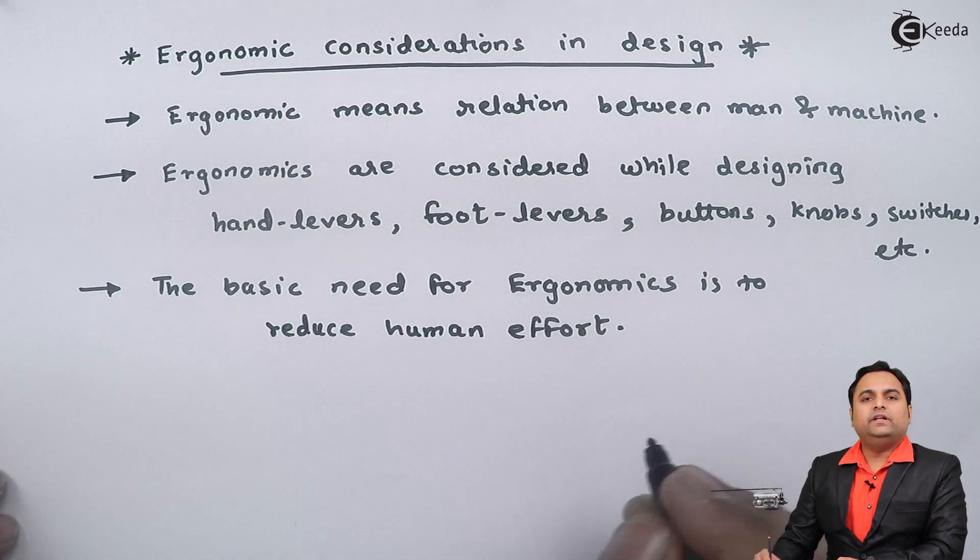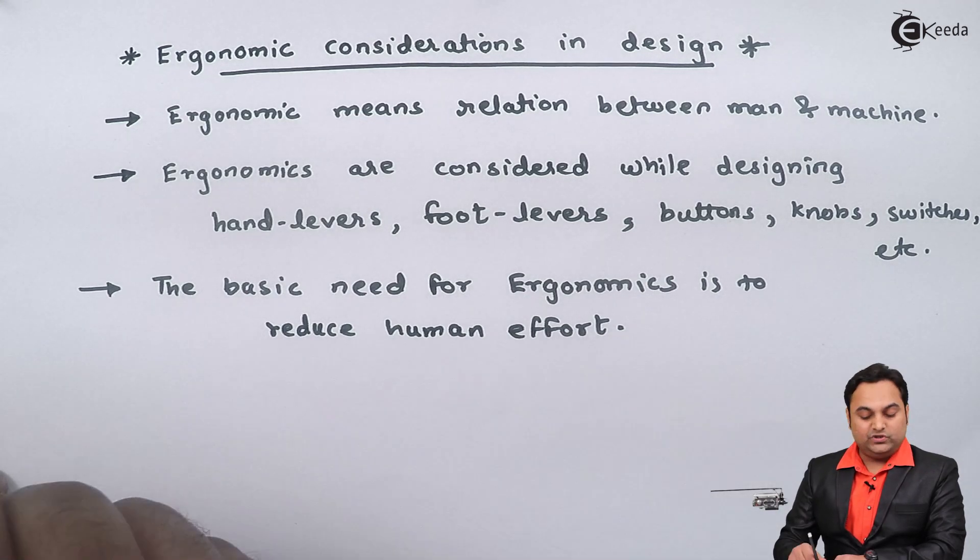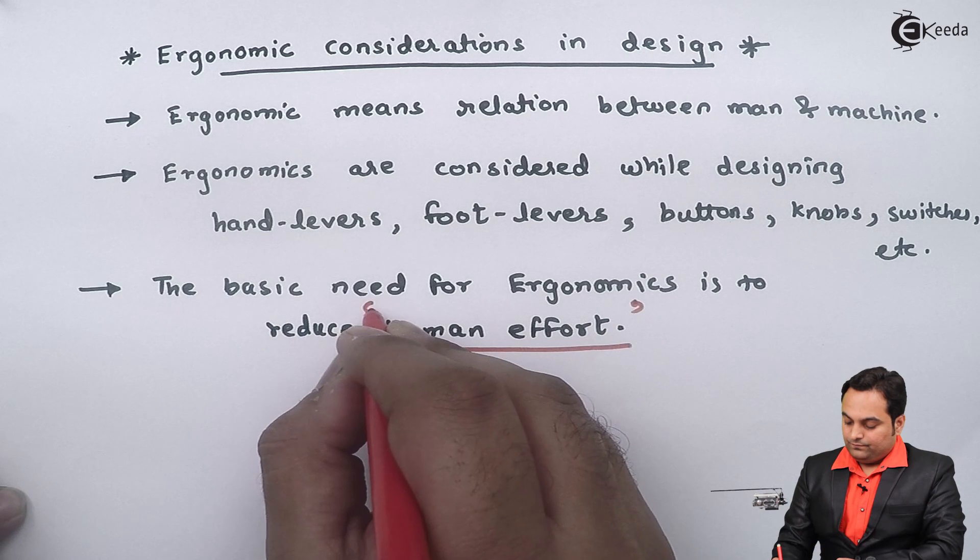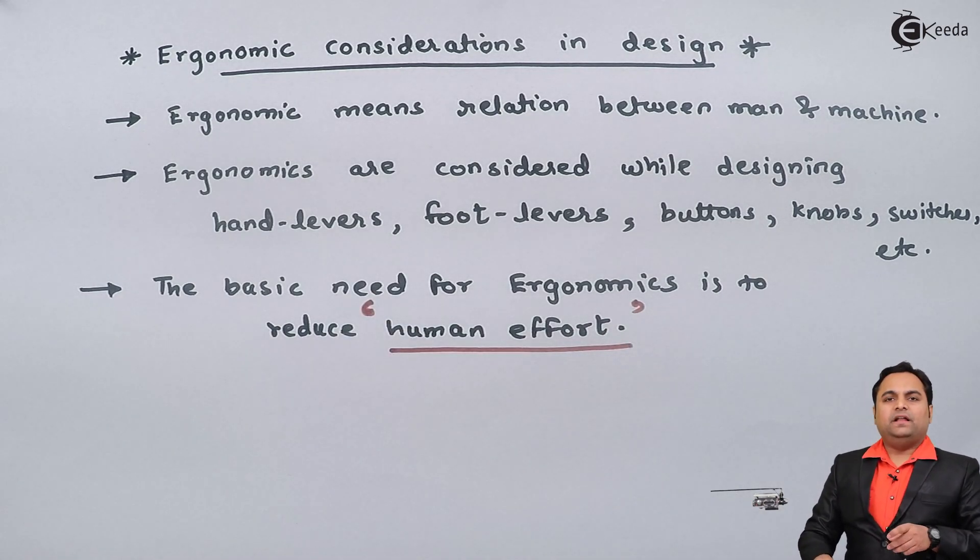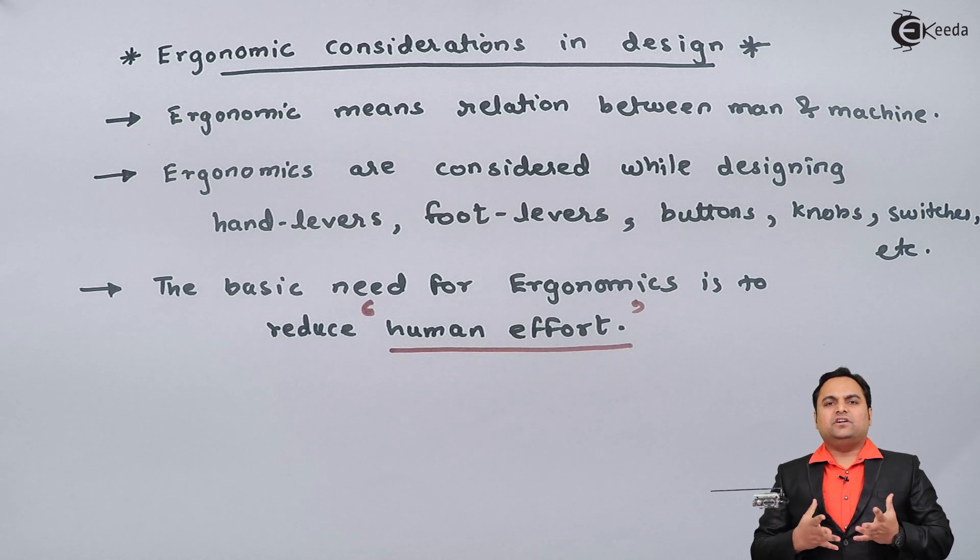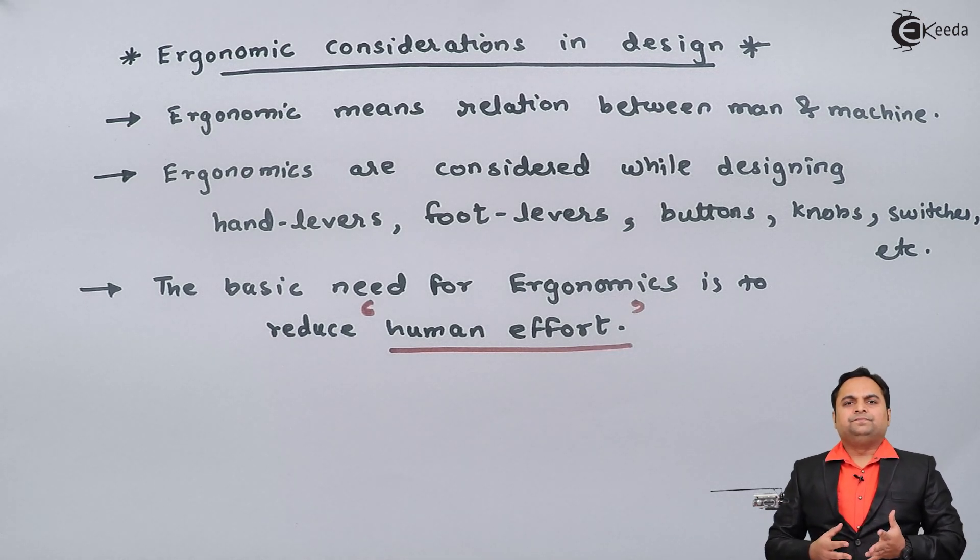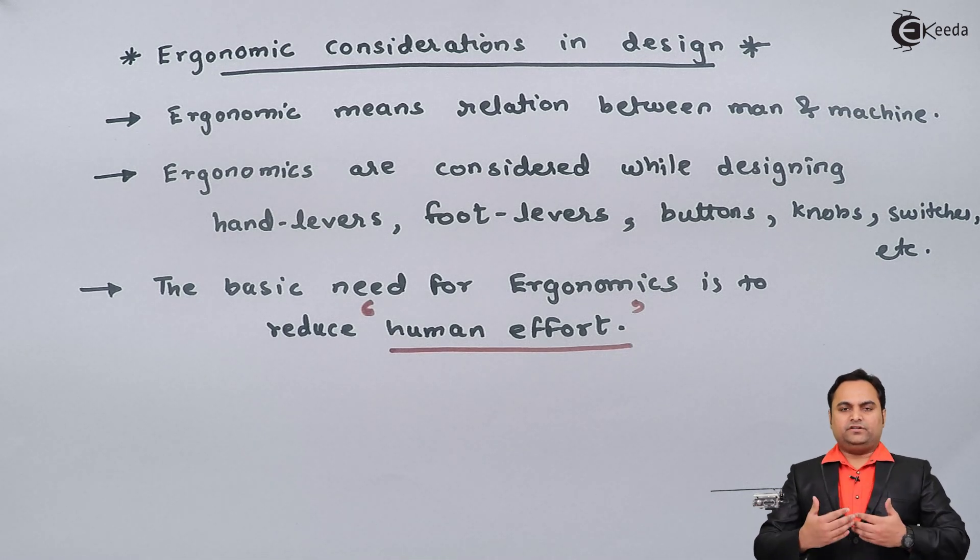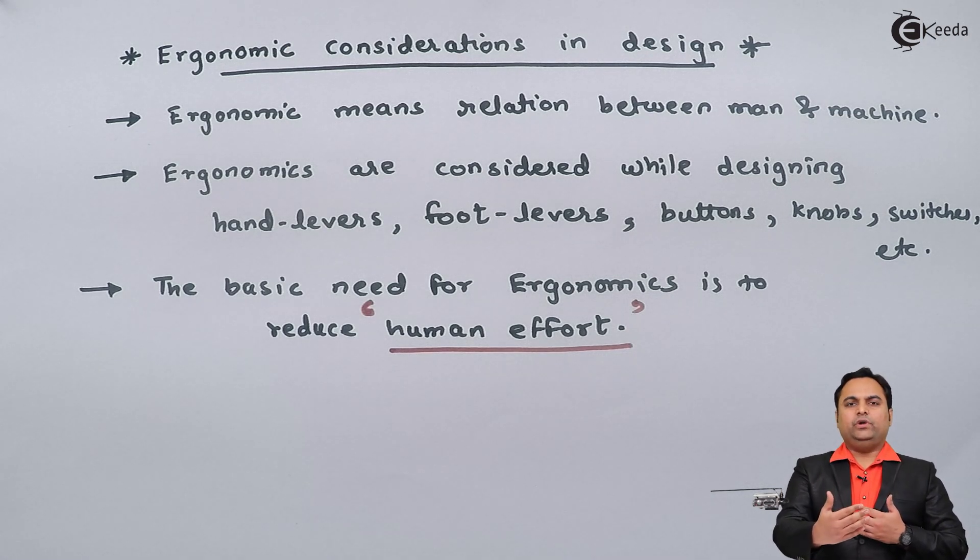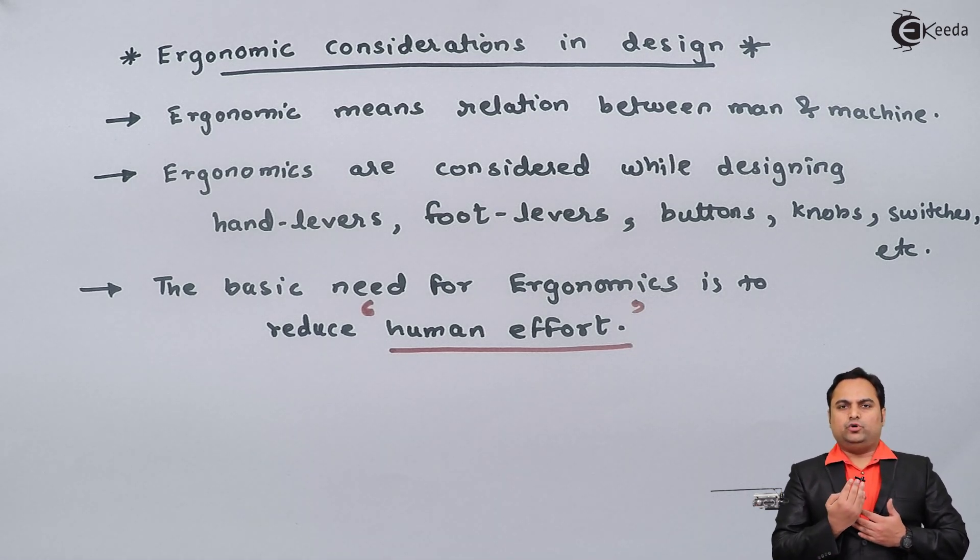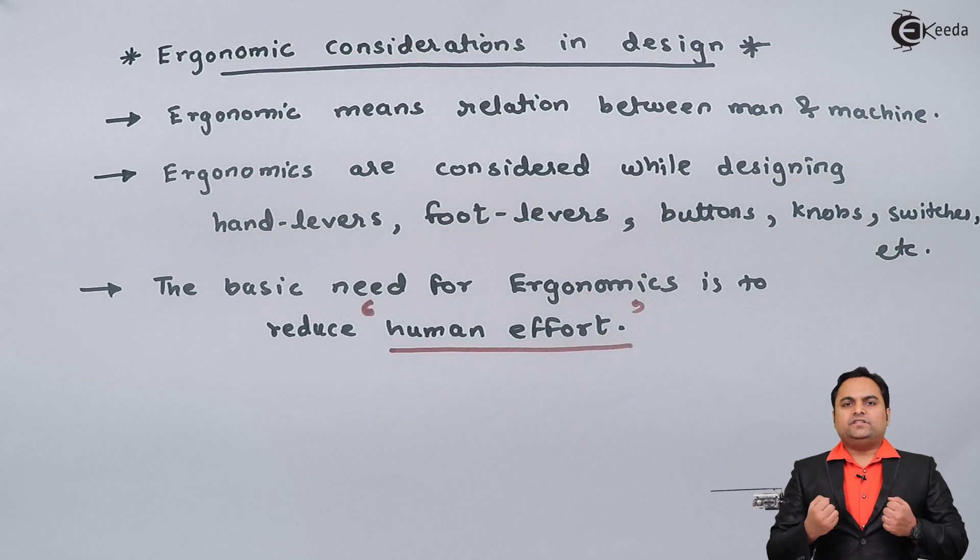That is to decrease the amount of force which we apply. Like for example, I will again give the example of a car. Suppose if we are driving a car, in that case if there is too much distance between the driving seat and the steering wheel, then also it becomes difficult to drive.